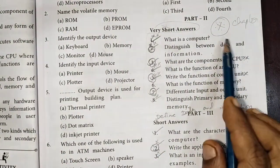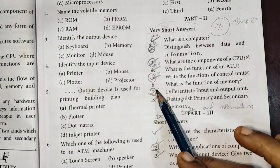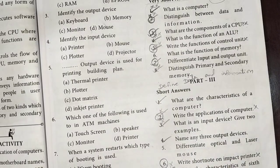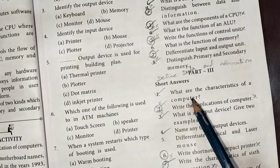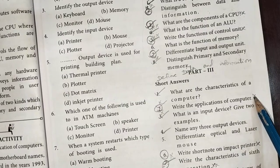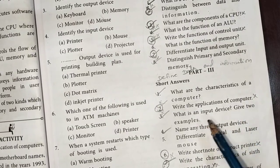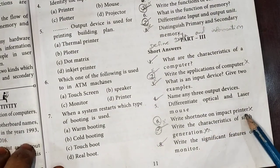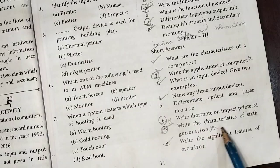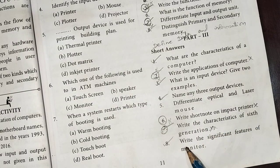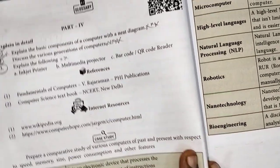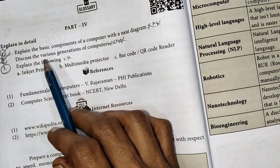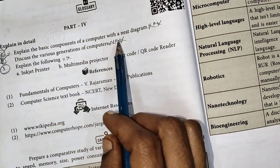The important units are 1st, 2nd, 3rd, 4th, 5th, 7th, and 8th. For short answer questions: define data and information, characteristics of a computer, applications of a computer, add input devices with 2 examples, name any 3 output devices, write a short note on impact printer, characteristics of 6th generation, significant features of monitor. For detail questions, explain the basic components of a computer with a neat diagram.